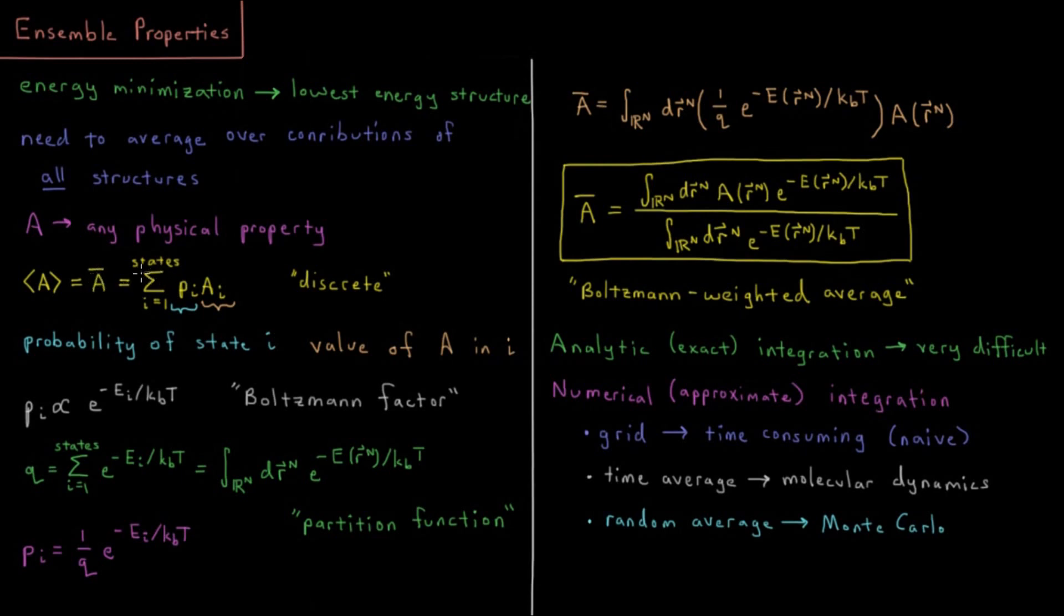This would be equal to a sum over all of our states of the probability of being in that state times the value of property A in state i. So this is what we would call a discrete sum, assuming we have some finite set of states which we can compute probabilities for, the value of these properties for, and then we can just sum and average over all these states.